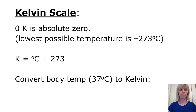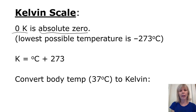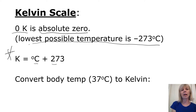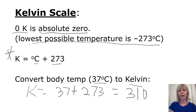The Kelvin scale is not as widely used as Celsius and Fahrenheit, but we learn it here because we'll use it in the chapter on gases — gas law temperatures are always in Kelvin. Zero K is absolute zero, the lowest possible temperature, equal to negative 273°C. The formula — which you need to memorize, it will not be given — is K = C + 273. For example, convert body temperature 37°C to Kelvin: K = 37 + 273 = 310 K.